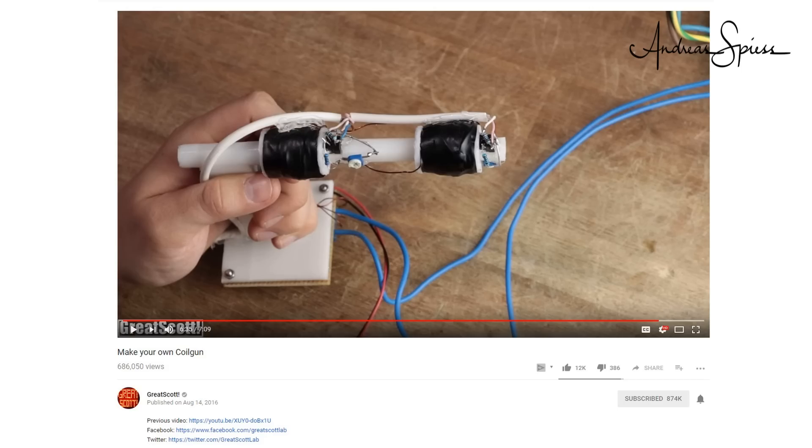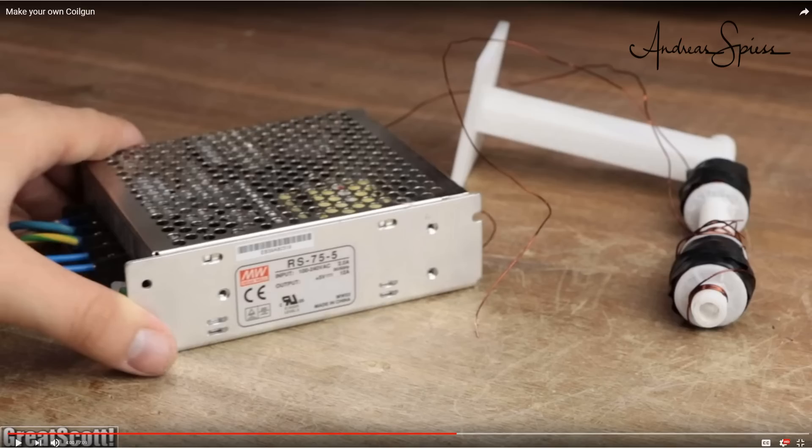Viewers of Great Scott's channel know that he did such a gun and I did not want to repeat it here. I wanted, of course, more. Keep in mind, his build was 5V and 12A.